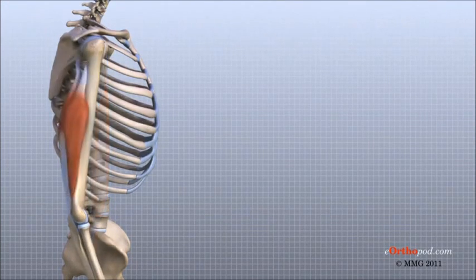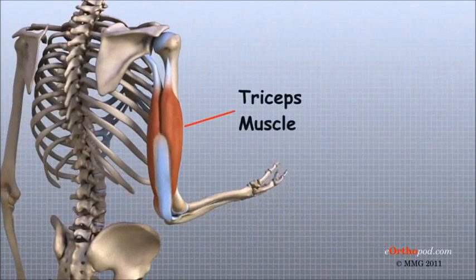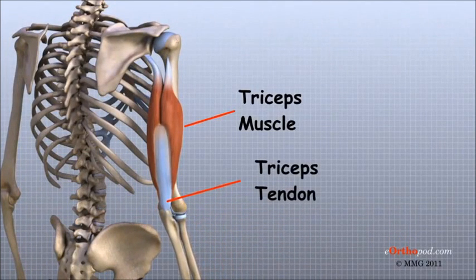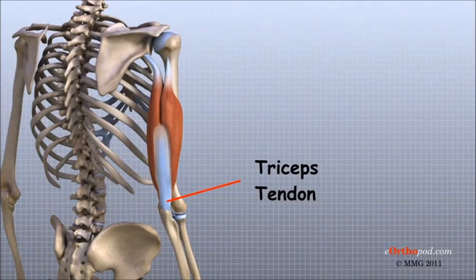The triceps tendon connects the large triceps muscle on the back of the arm with the ulna. It allows the elbow to straighten with force, such as when you perform a push-up.